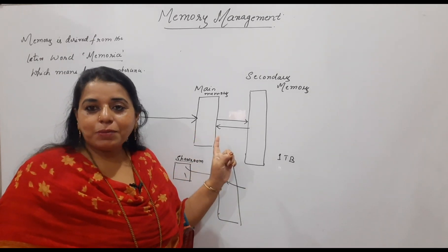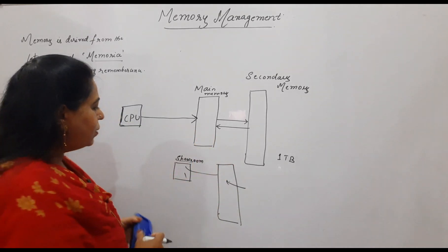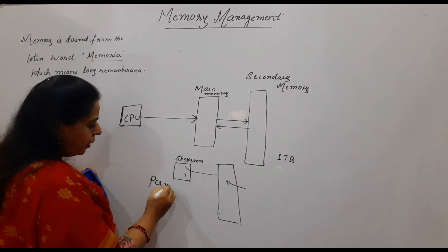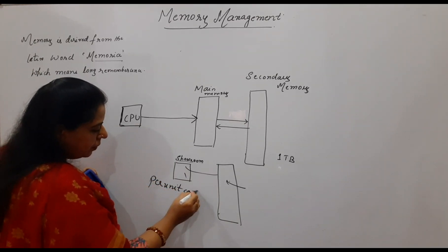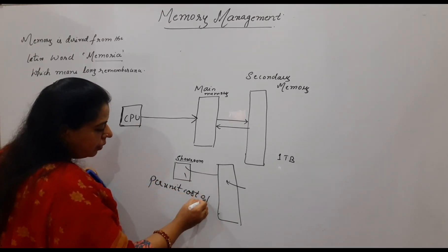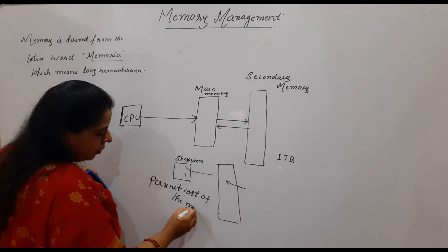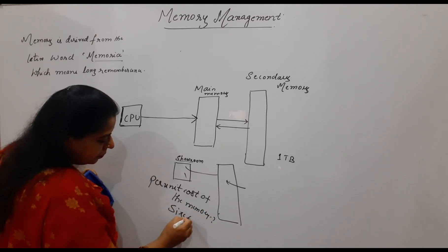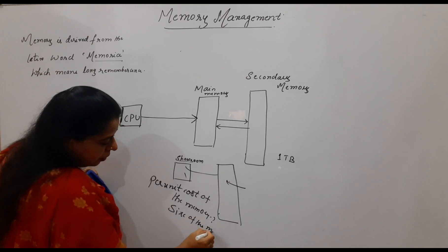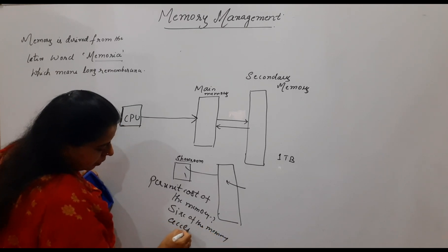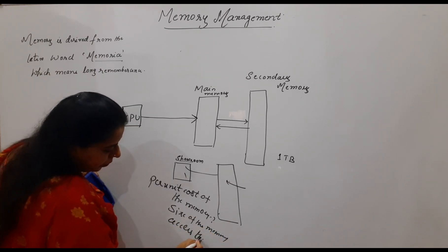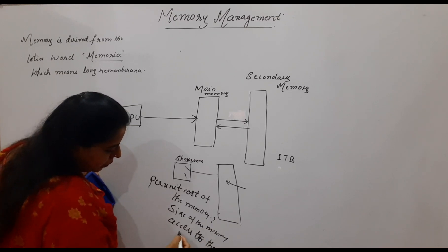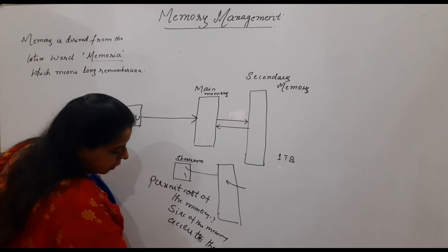The cost per unit for the memory is what users should keep in mind — along with the size of the memory and access to the memory. These are the desirable features from any user regarding memory.